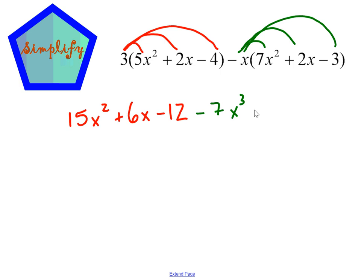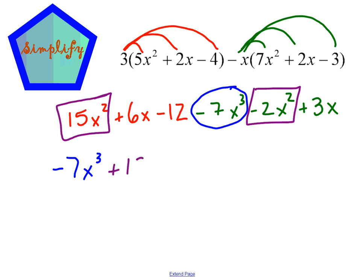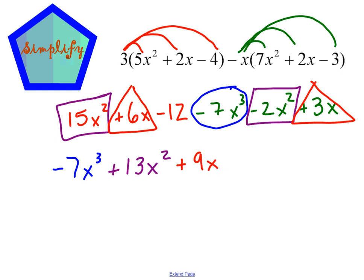Negative 1 times 2 is negative 2. x times x is x squared. Negative 1 times negative 3 is positive 3, and we have an x multiplying that. Now we check for like terms. I have negative 7x cubed. I have an x squared and a negative 2x squared, so altogether I have 13x squared. I have a 6x and a 3x, so altogether I have 9x's.